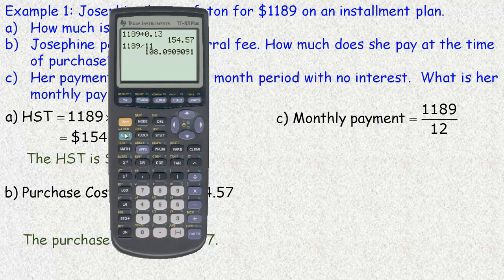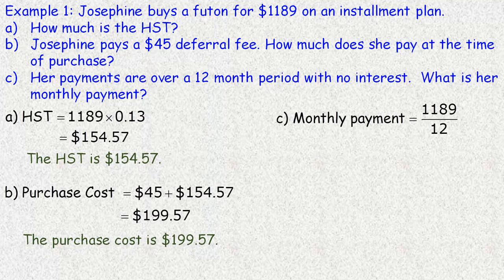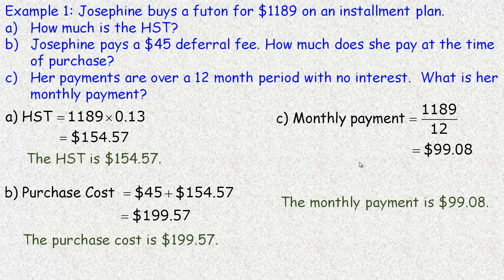I just noticed I accidentally divided by 11 instead of 12, so let's fix that — 12 months. That's better: $99.08 is what she would be paying. I don't know where that 11 came from, I just typed the wrong key. So $99.08 is her monthly payment over 12 months. That example uses no interest.